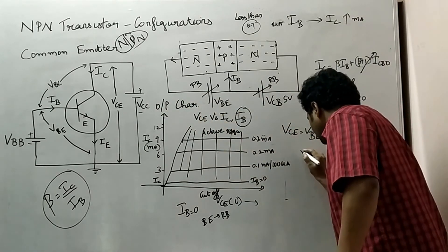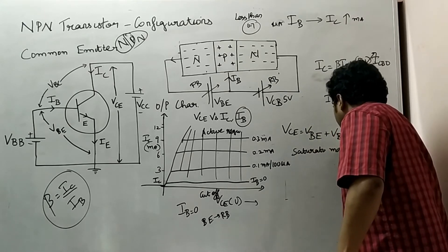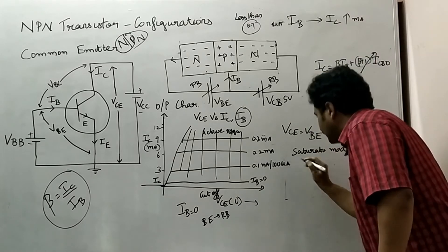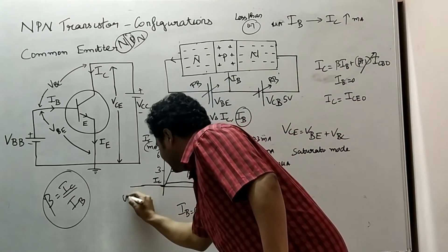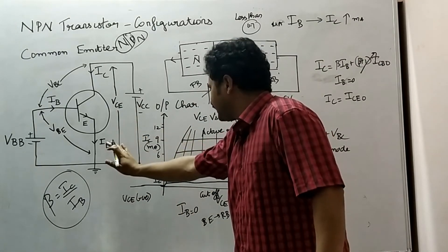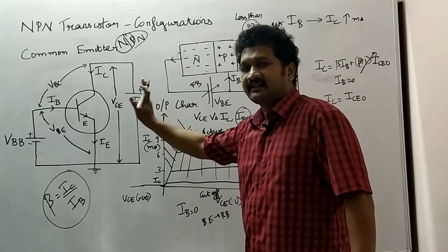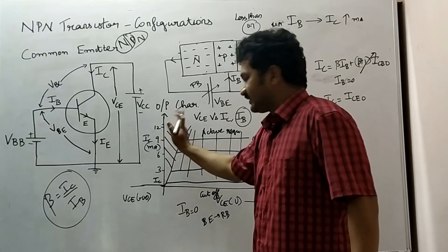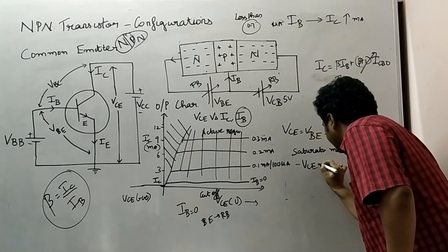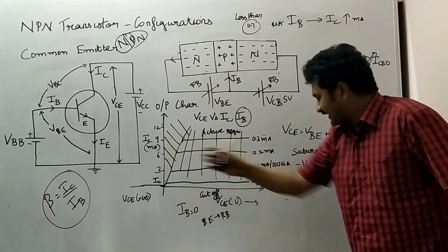The final mode is saturation mode. In saturation mode, both junctions are forward biased. In this portion, VCE will be negative — the second quadrant is also a saturation region. I will explain starting from the second quadrant first. When VCE becomes negative, we use the equation with a negative sign.